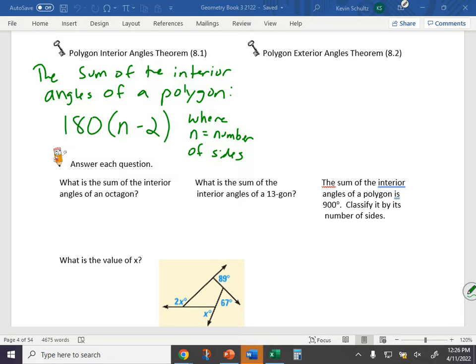The sum of the interior angles of a polygon is 180 times n minus 2, where n equals the number of sides. So, for example, in a triangle, we all know how many degrees a triangle has, right? One hundred eighty. One hundred eighty. One eighty times three minus two, the three coming from the number of sides that a triangle has. One eighty times one is one hundred eighty.